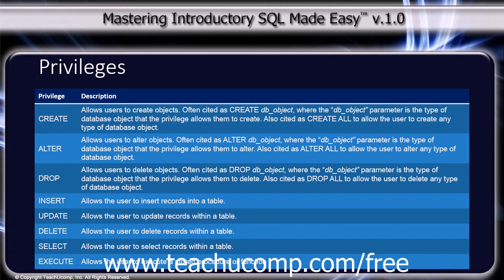The alter privilege allows users to alter objects, often cited as ALTER database_object, where the database object parameter is the type of database object that the privilege allows them to alter. Also cited as ALTER ALL to allow the user to alter any type of database object.